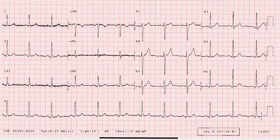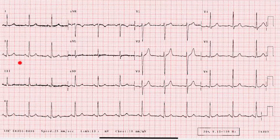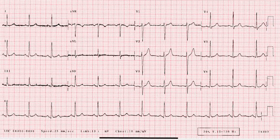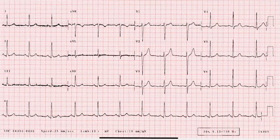Starting with the first EKG, I look at lead 2 to find an upright P-wave that is consistent in shape and size — and I can see it there. This is normal sinus rhythm. Then I take a quick look at all other leads to confirm an upright P-wave is present. Except in AVR where it is inverted as expected, and it is upright in V1 and V2. So the P-wave is okay. Then I look at the PR segment to see if it is isoelectric.